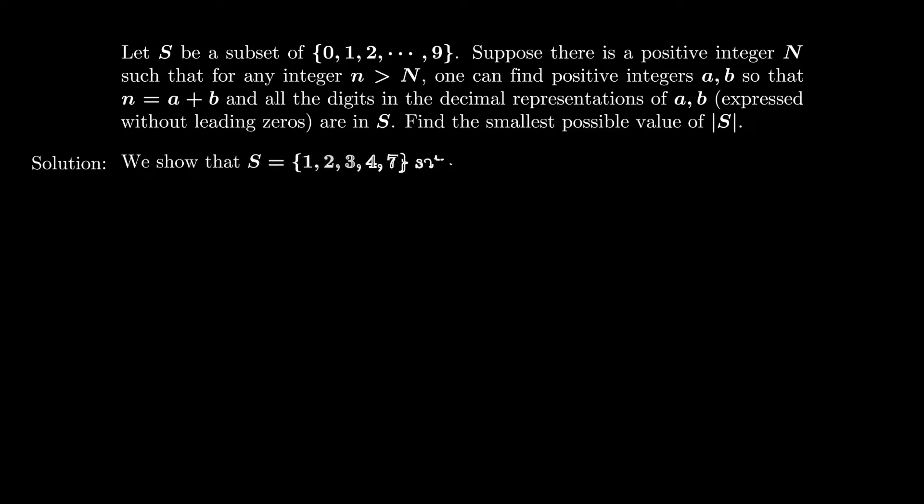So let me first show you my construction. The subset I pick is {1, 2, 3, 4, 7}. I will show that any number larger than 1 is indeed a sum of numbers with digits in this subset.